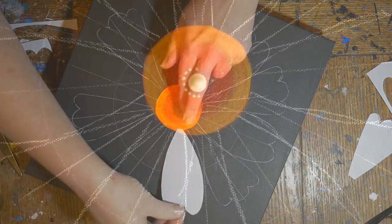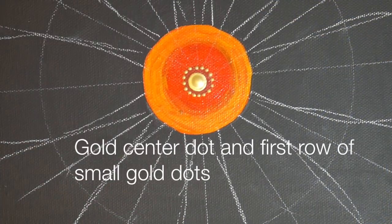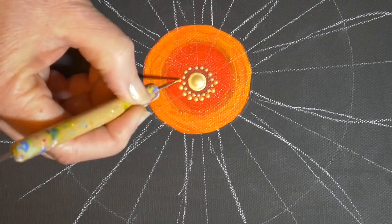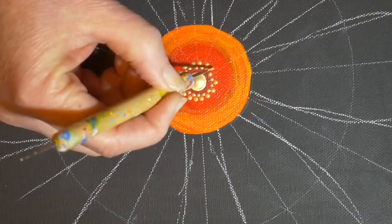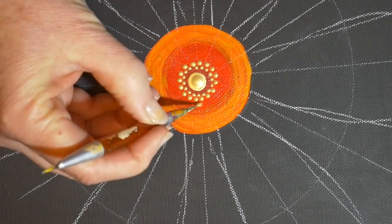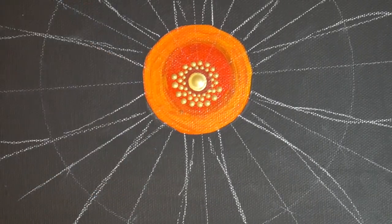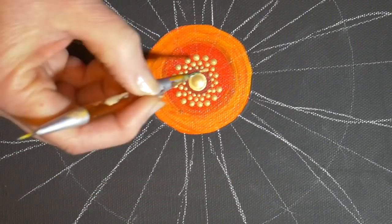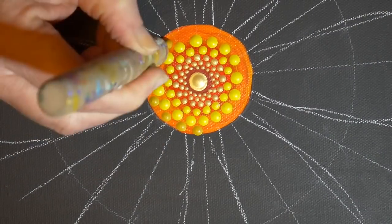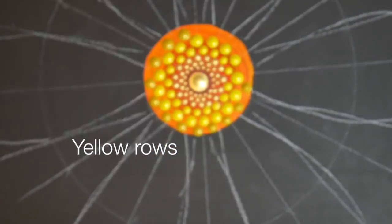Now I've got a gold center dot and then I'm just offsetting rows of gold dots. I'll be doing that all the way out until I decide to switch to yellow. This is going to be the center of the flower.